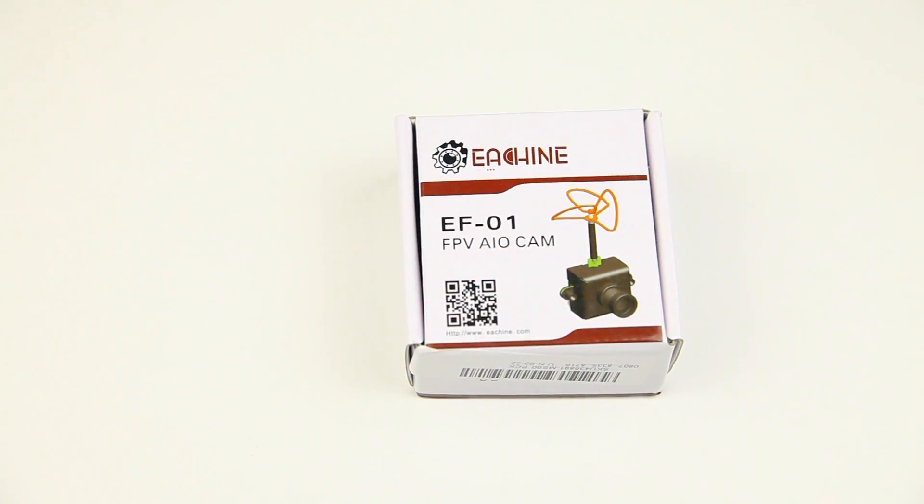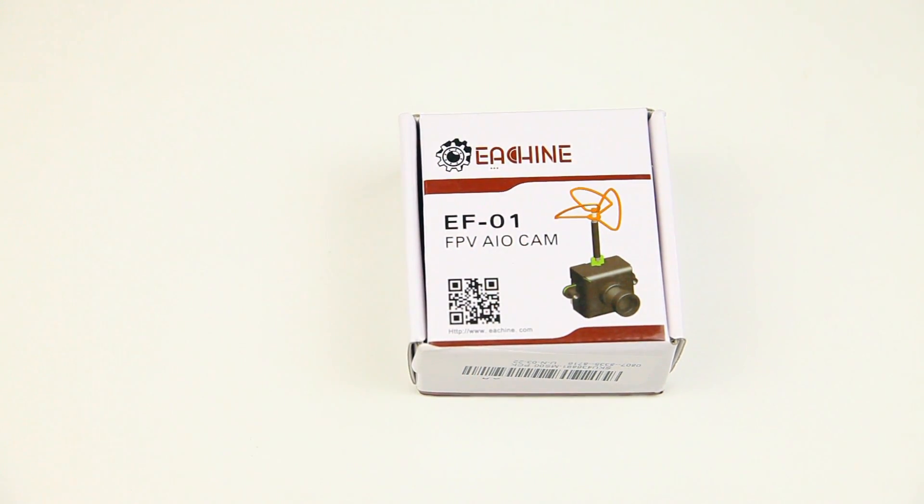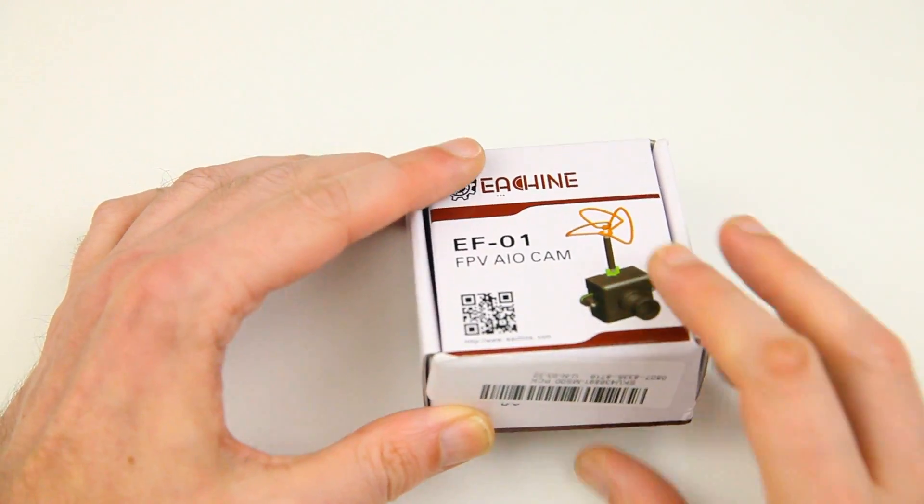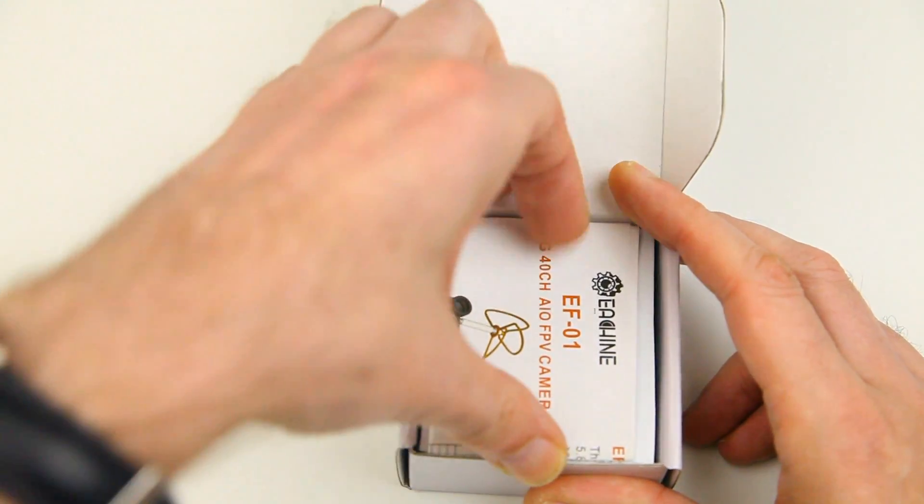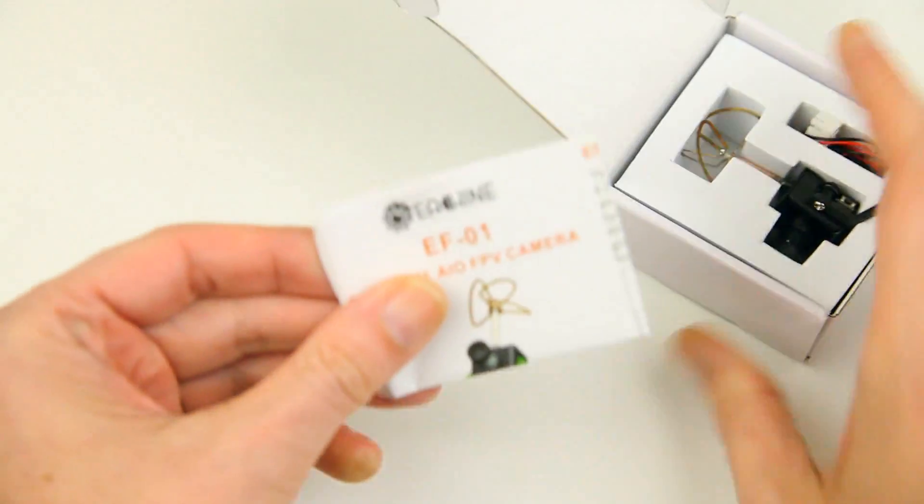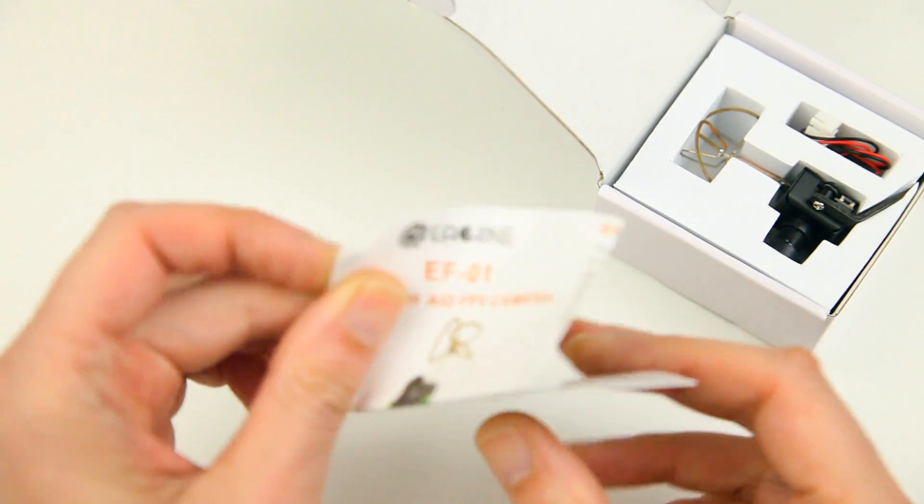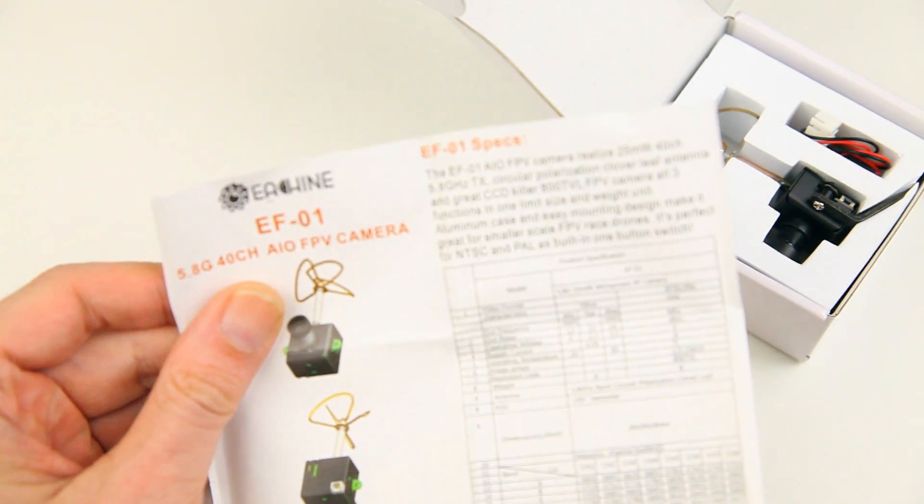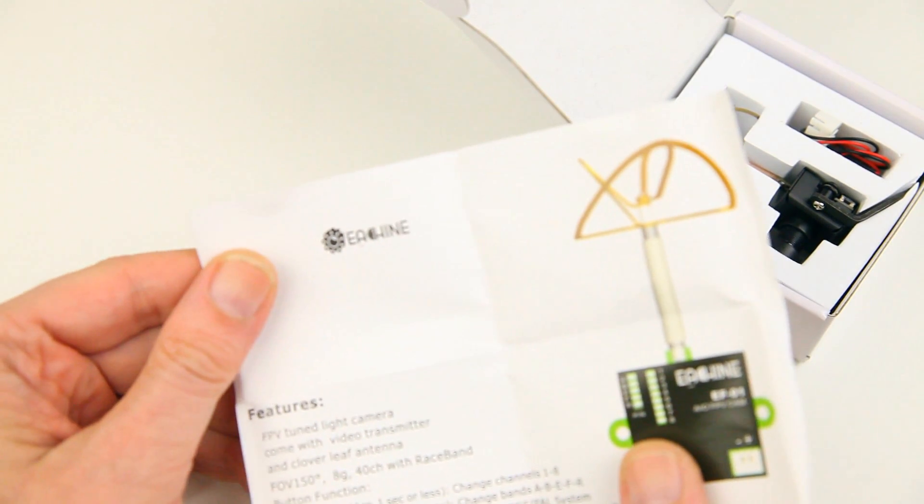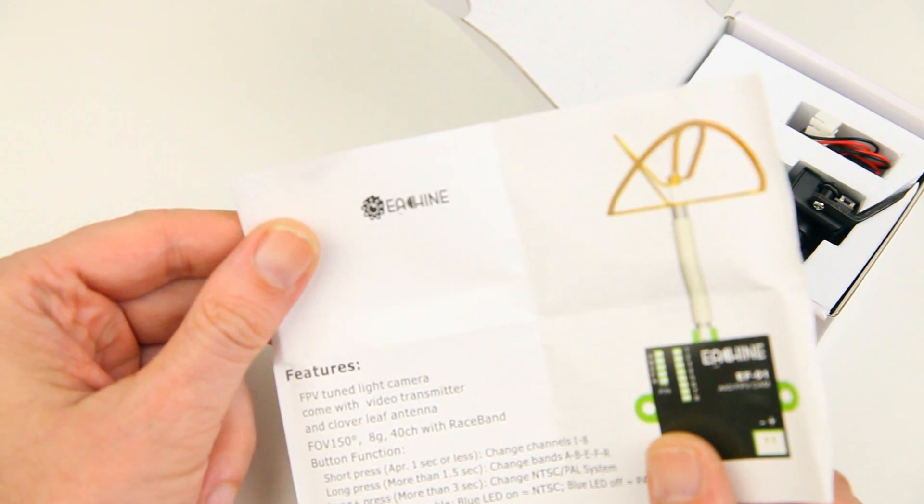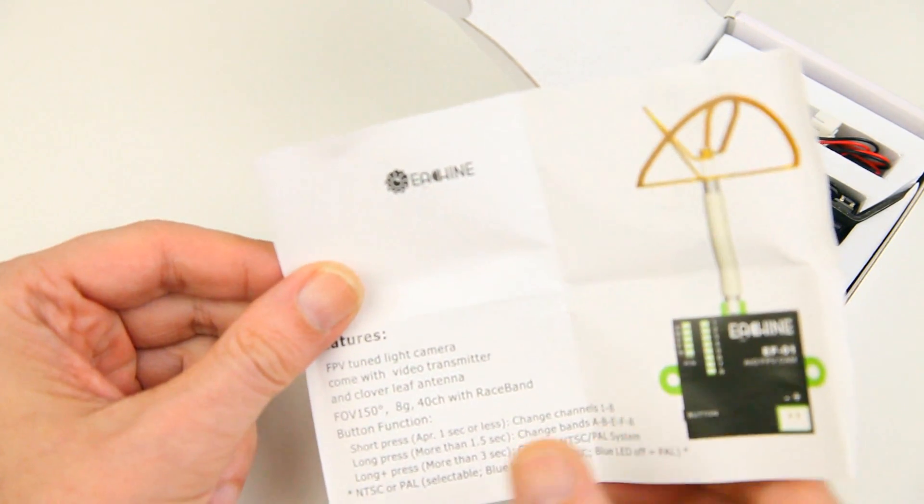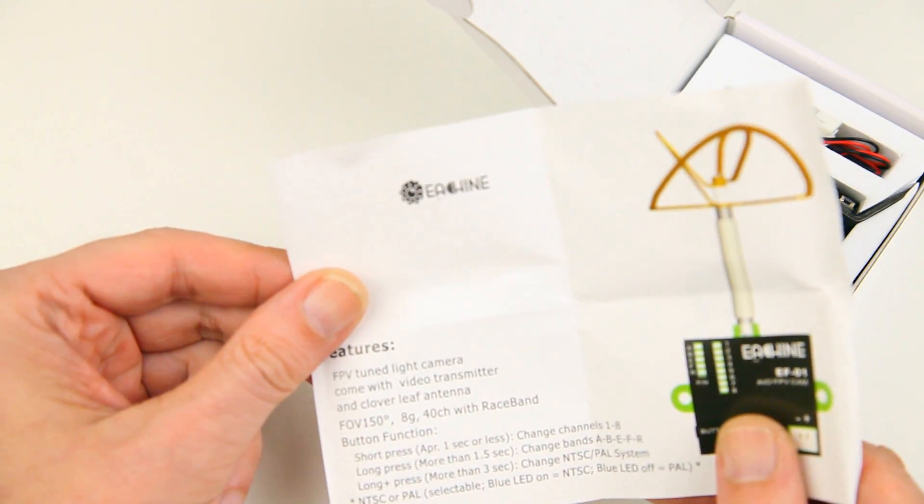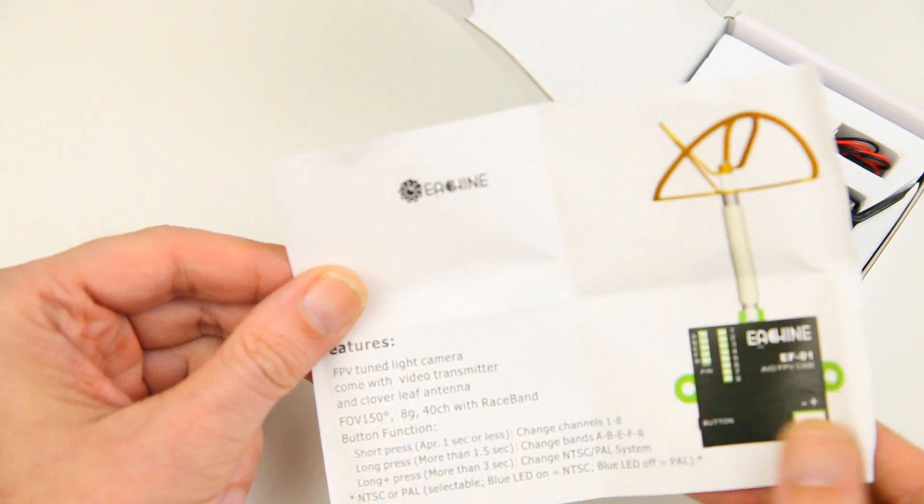Last but not least, it is an FPV plane so it comes with this Isien EF01 FPV all-in-one camera and transmitter. Let's have a look at that. It comes with an instructions leaflet which at least has the frequency table in it. And let's see, it is a 40 channel, 25 milliwatt FPV system.